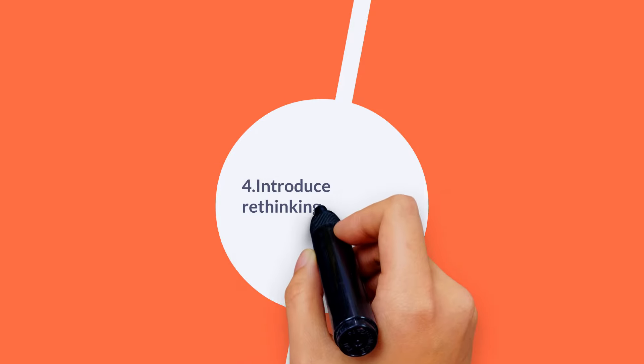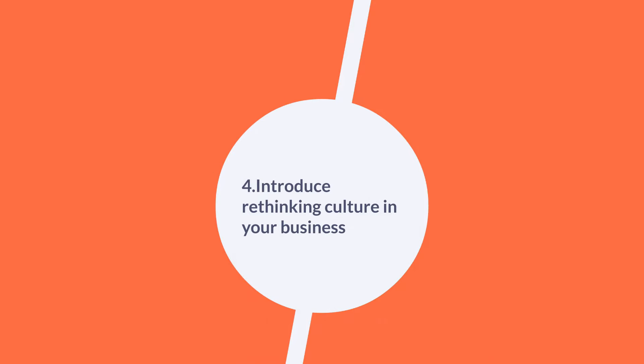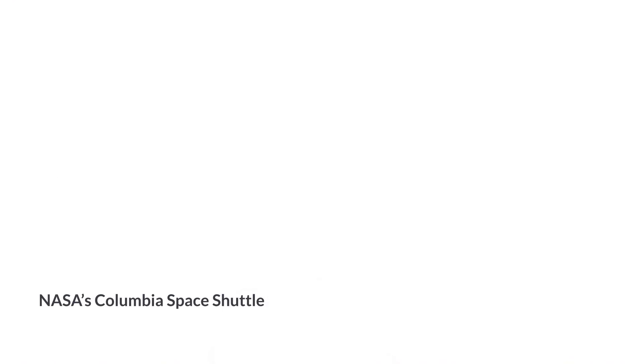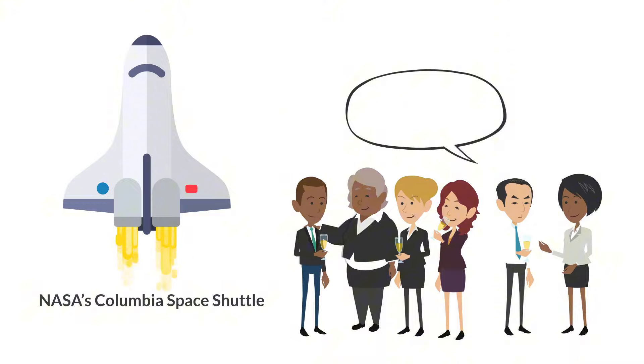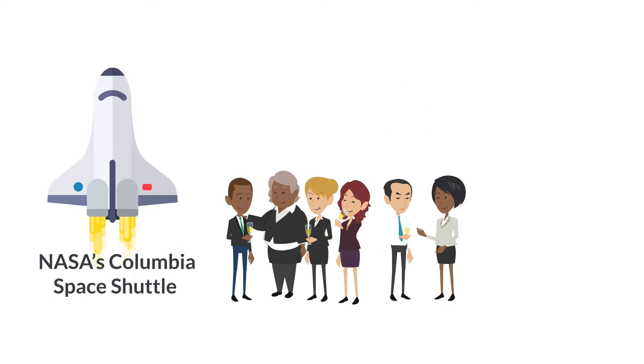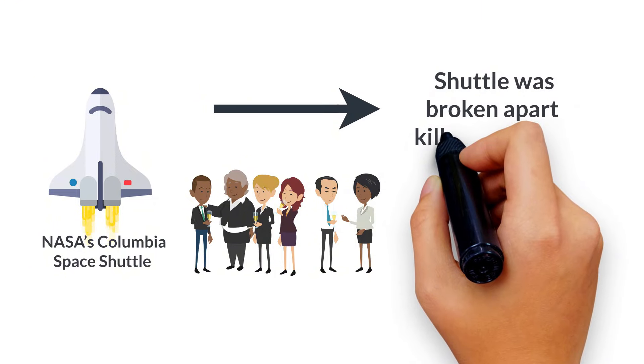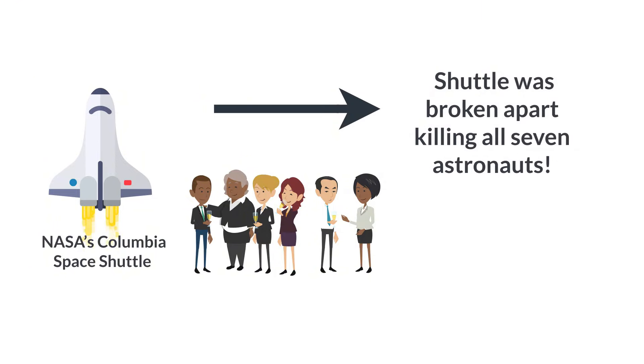Four, introduce rethinking culture in your business. Rethinking is important not just for individuals, but for organizations too. A good example of this is what happened with NASA's Columbia Space Shuttle in 2003. When the shuttle took off, a piece of foam broke off. The NASA ground team didn't think much of it because foam had fallen off in the past without causing problems. However, this time, it was a serious issue. The foam damaged the shuttle, and it broke apart when reentering the Earth's atmosphere, killing all seven astronauts.